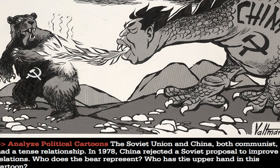This is an important image for understanding a key relationship during the Cold War — the relationship between China and Russia. Both animals shown have the hammer and sickle symbol, the classic symbol of the Communist Party. China is symbolized by a dragon, and Russia by a bear. They're both communist countries, but looking at this image, you get the hint that they did not necessarily get along. This tension between the two communist nations is really important, because without it, they could have formed a much more powerful coalition. Instead, it weakens communism's image and strength around the world, because it's not united.